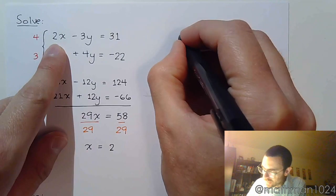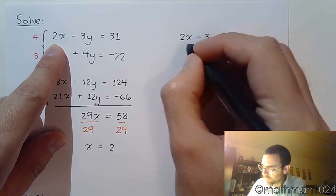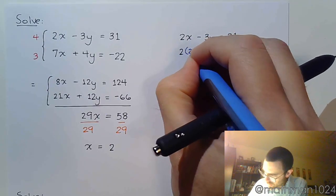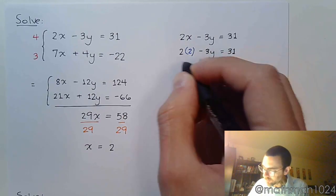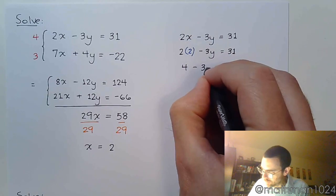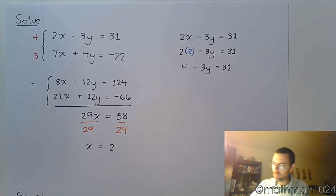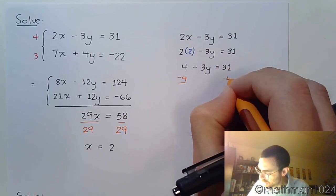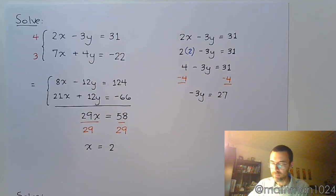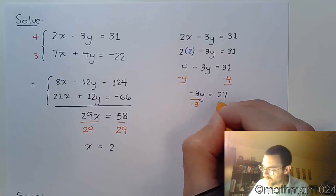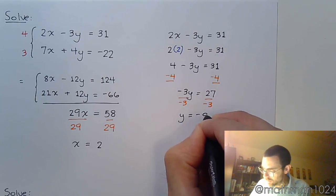So I'm going to take the first equation and again it doesn't really matter which one you choose. So 2x minus 3y equals 31. I'm replacing the x with 2. So 4 minus 3y equals 31. Subtract 4 on both sides. Negative 3y is equal to 27. Divide both sides by negative 3.